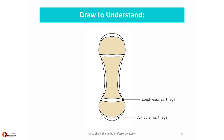That is the bone part, that is the compact bone, and that is your articular cartilage. Let us now take a red pen and begin to draw the blood supply to this bone.